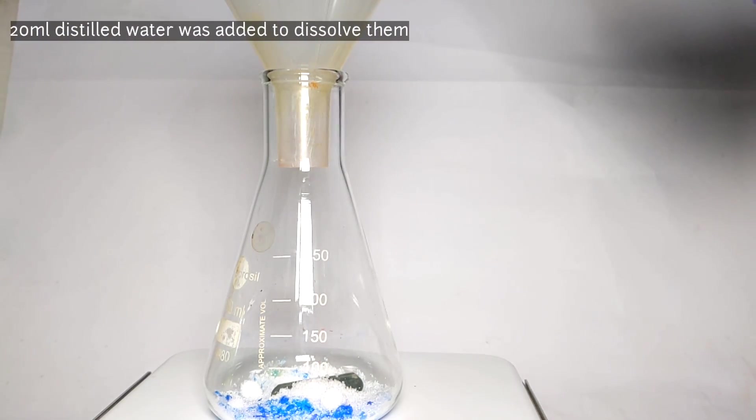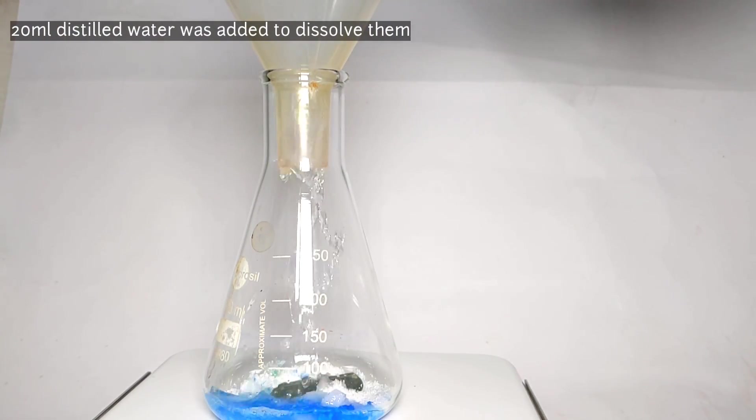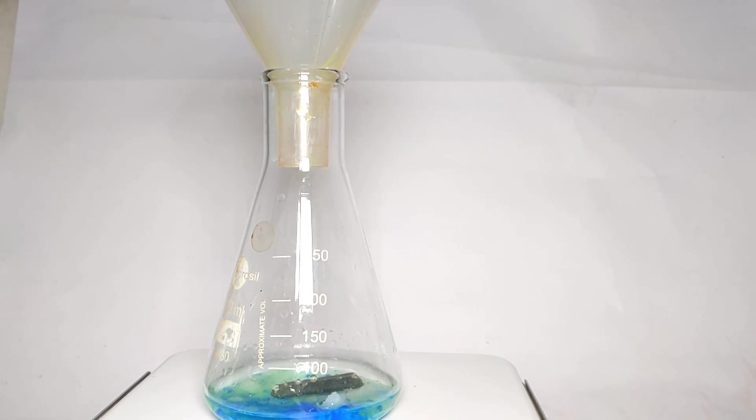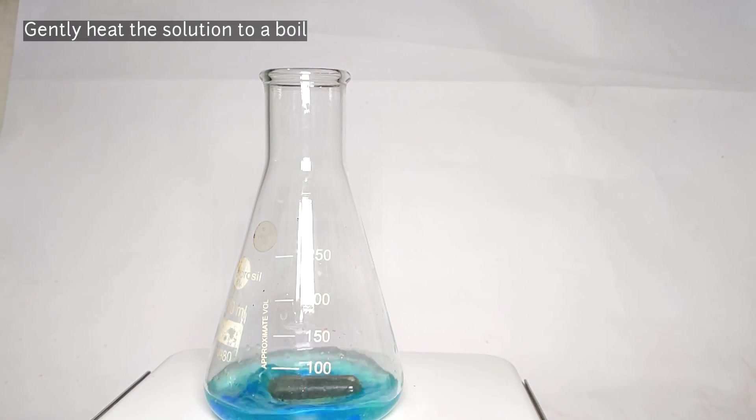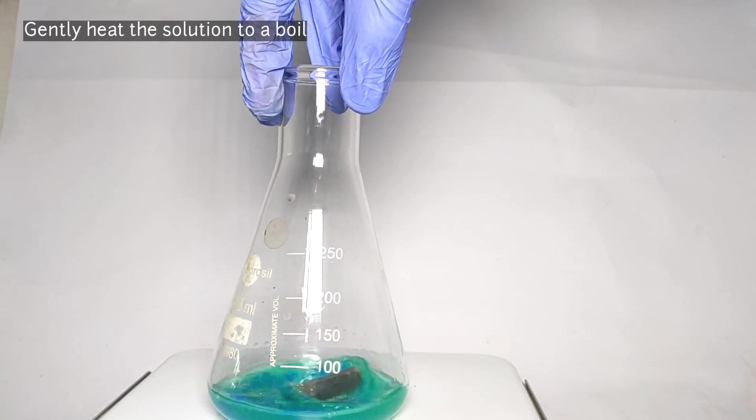20 milliliters of distilled water was added and then stirred to dissolve. It was then heated until it's boiling hot. The solution immediately turns green due to the formation of cupric chloride or copper 2 chloride.